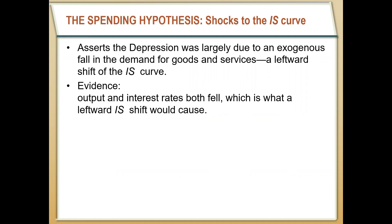We're going to call this the spending hypothesis. On its surface, this seems to explain the Great Depression fairly effectively. Throughout the Great Depression, both output and interest rates fell, which is what we would expect from a leftward shift in the IS curve.